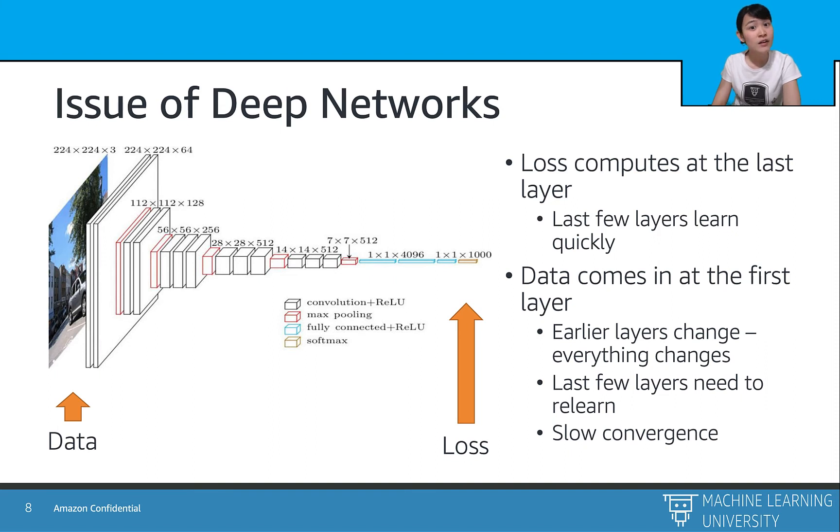So overall, this means a slow convergence in total. So can we avoid the change in last layers while learning the first layer?